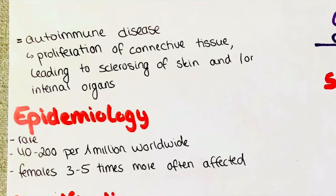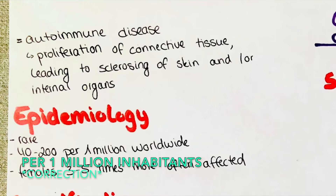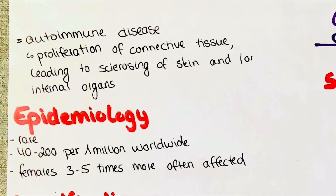As with the other diseases, it is an autoimmune disease characterized by the proliferation of connective tissue, which leads to sclerosing of the skin and internal organs. It is a rare disease with approximately 40 to 200 new cases annually worldwide. Females are, as with most of the other collagenoses, more often affected — in this case approximately three to five times more often. This large estimation is due to undetected cases and regional differences.